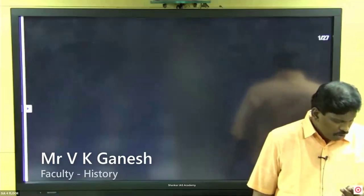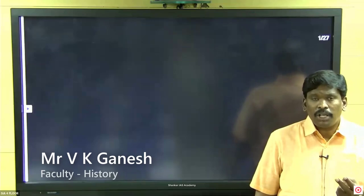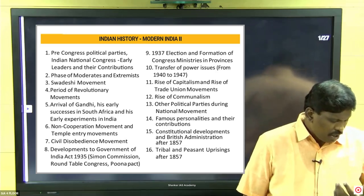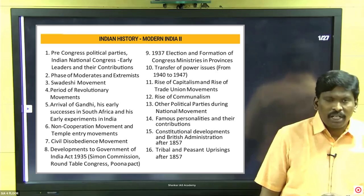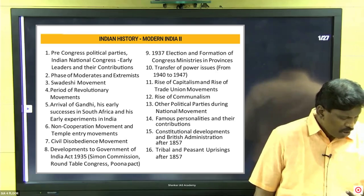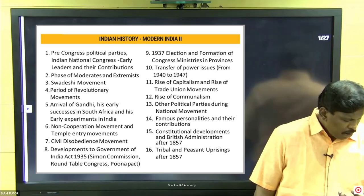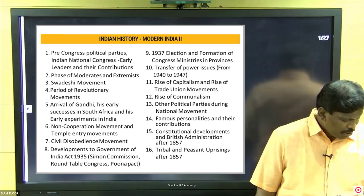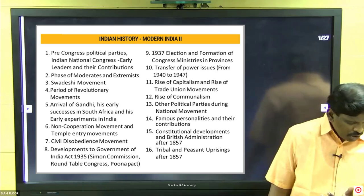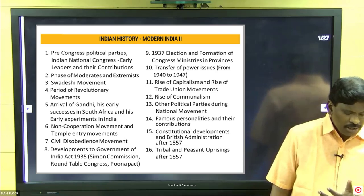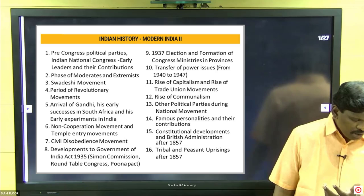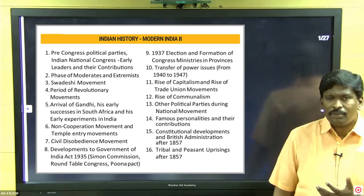Test number eight is Modern India Part 2 and current affairs for July 2020. The second part consists of pre-Congress political parties, moderates and extremist phase, Swadeshi movement, revolutionary movement, arrival of Gandhi, non-cooperation, civil disobedience movements, Simon Commission, round table conferences, 1935 elections, transfer of power issues, and trade union movement.